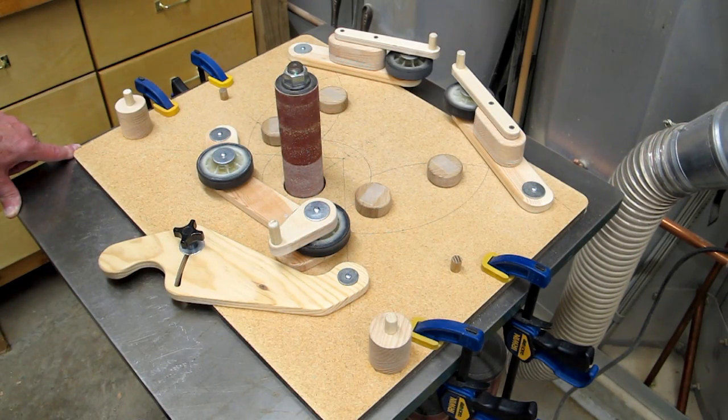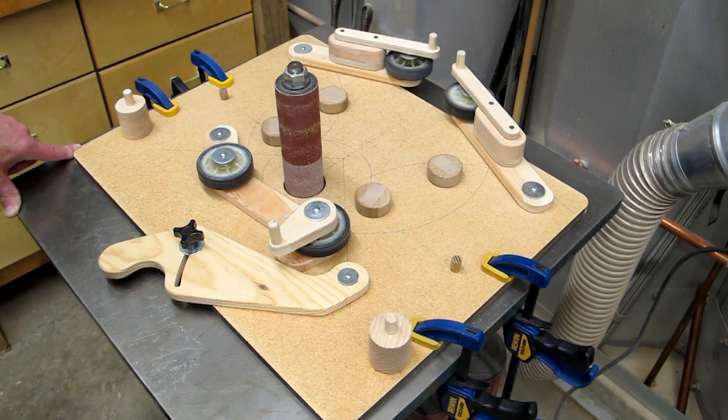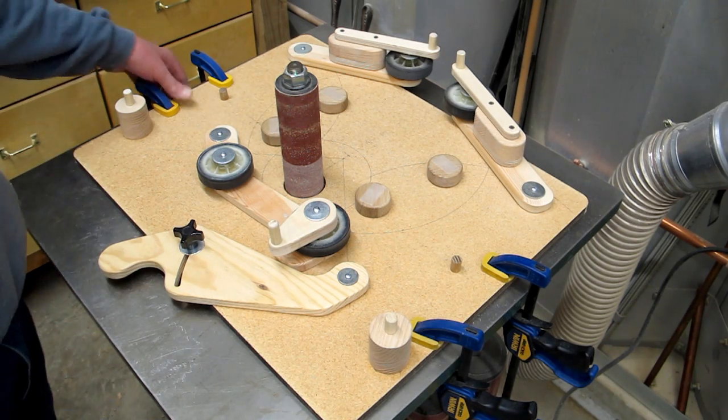I designed what I call the inside diameter circle sanding jig, which is clamped to the top of my spindle sander.